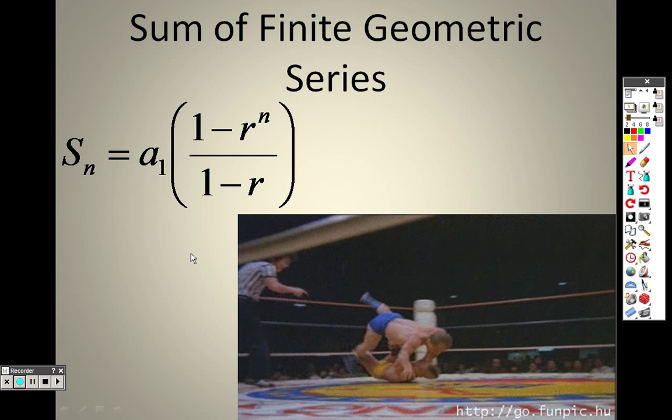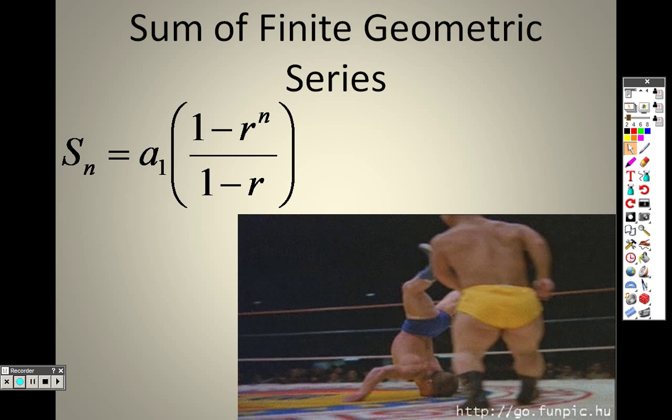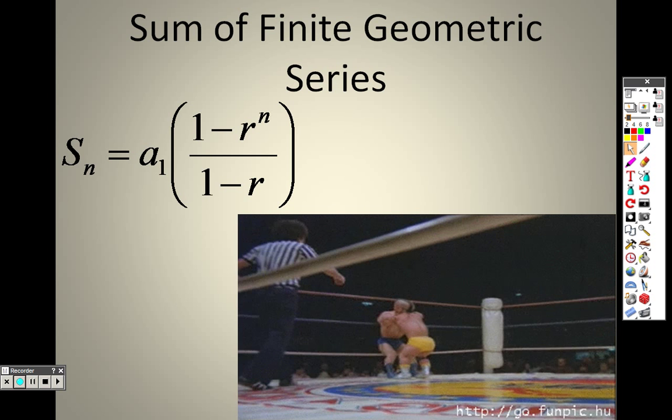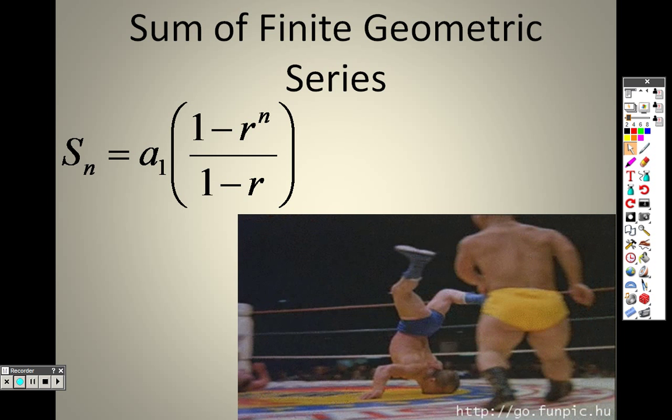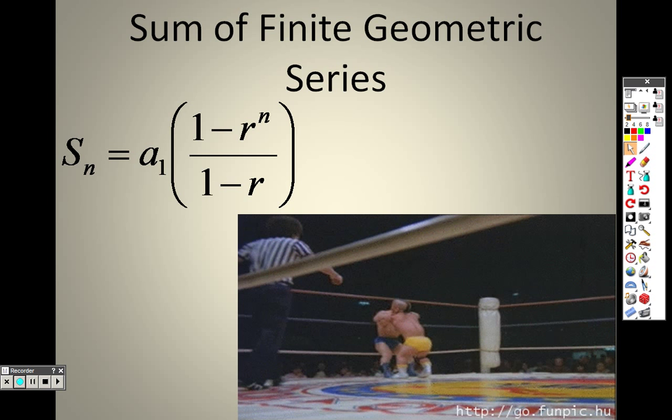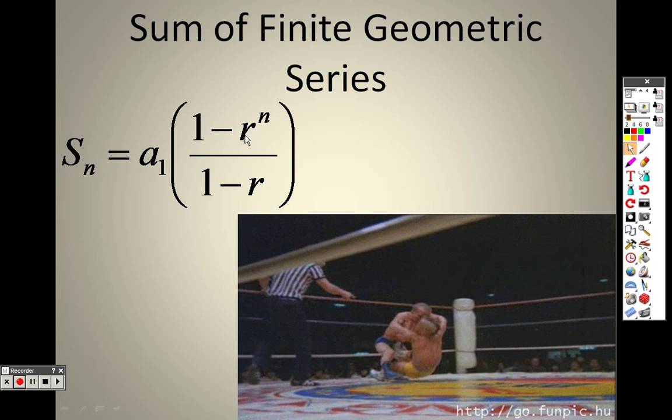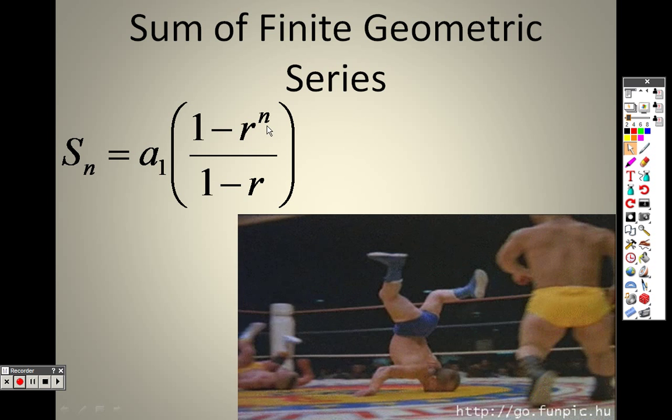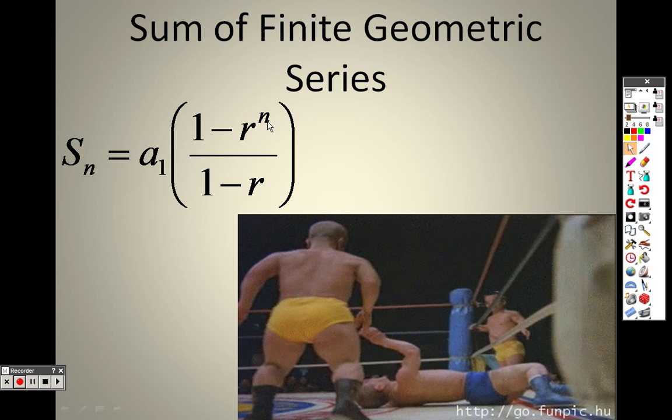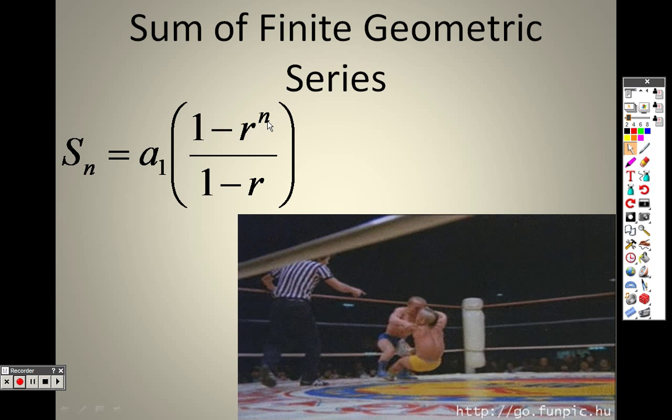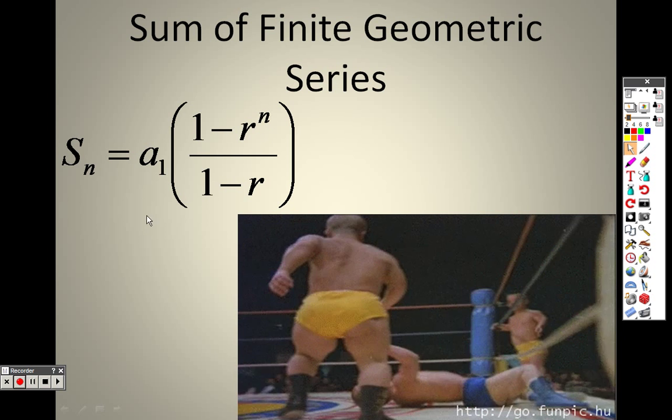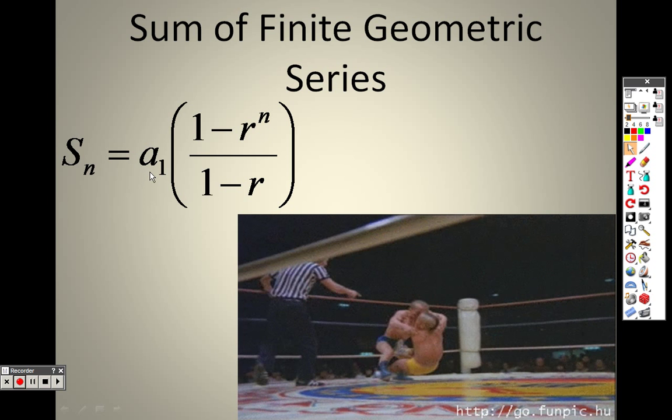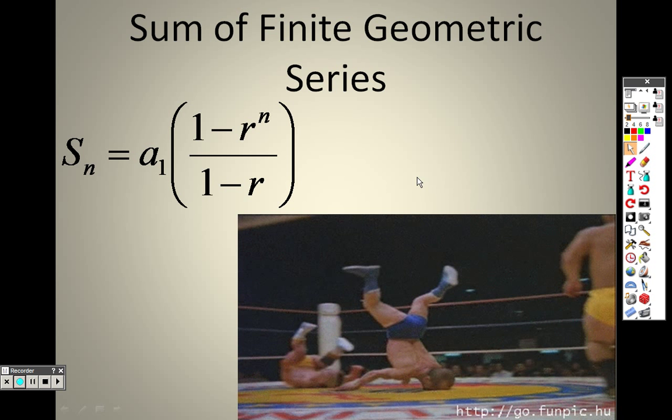So here is the formula. I know this one looks a little crazier than the arithmetic one in 11.2 that we talked about, but let's take a look at it here. a sub 1 still stands for the first term, r is the common ratio that we're talking about, and n is the number of terms. So all this is still the same: n is the number of terms, r stands for the common ratio, a sub 1 still means the first term.